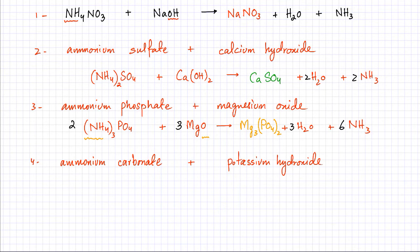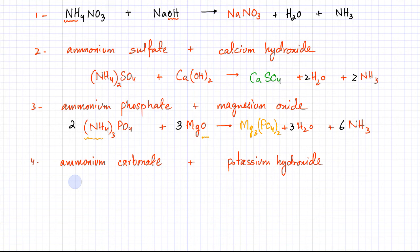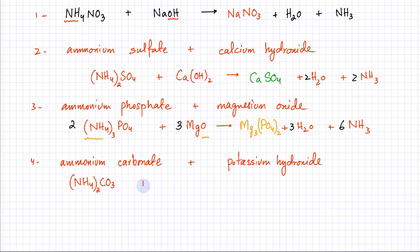Let's do the fourth reaction: ammonium carbonate reacting with potassium hydroxide, which is a metal hydroxide — a base. NH4 is +1 and carbonate CO3 is 2-, so using the crisscross method the formula is (NH4)2CO3 — 2 ammonium ions. Potassium hydroxide: K is +1, OH is -1, so it's KOH. They react to produce water and ammonia gas.